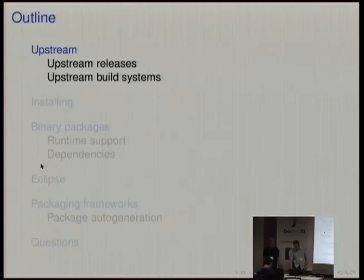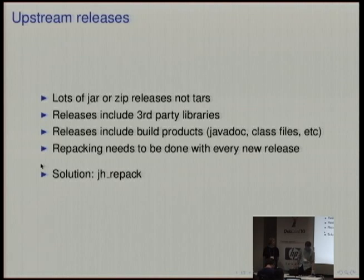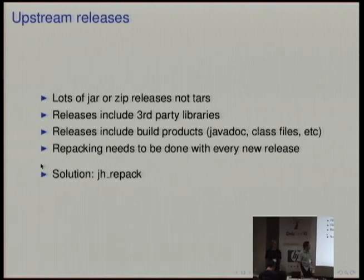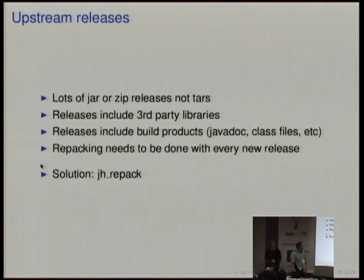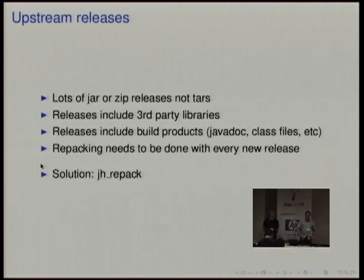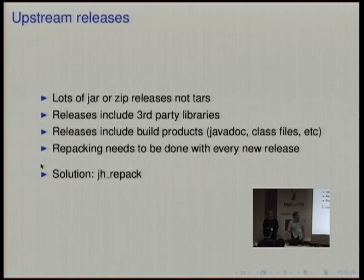Firstly, upstream. The problem with a lot of Java upstreams is they give you their source as jar files or zip files, which obviously we can't put in the archive. A lot of the time they will have bundled jars from the third-party libraries they depend on. They may even include all of the built class files and the Javadoc in the sources, all in a single bundle. And if you have to repack this, you're going to have to do it every single time there's a new upstream release. So to help with that, we have jhrepack.